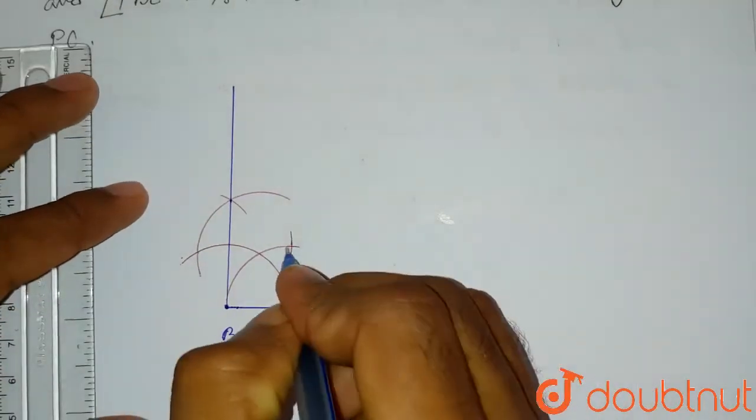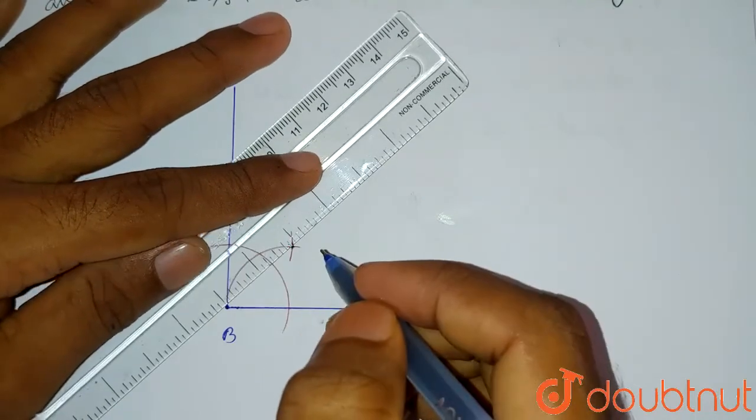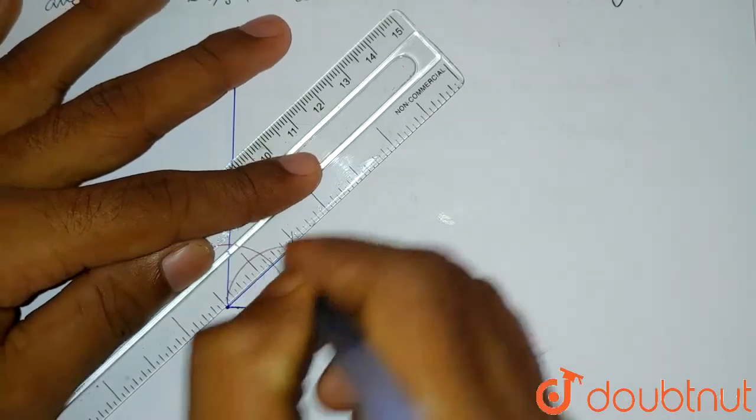So this is our point. If we connect this point, we will get our 45 degree line. So this will be our 45 degree line.